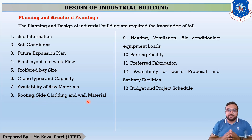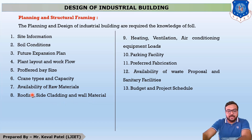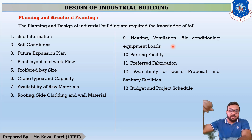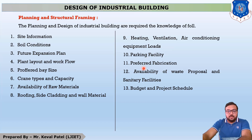For roofing, there are basically two types of materials: first is GI Sheet (Galvanized Iron Sheet), and second is ACC Sheet. These two sheets are generally used in the market for roofing, cladding, and side material. Next is Heating, Ventilator, and Air Conditioning Equipment Loads — if we provide ventilations on top of the industry, we need to account for the load of that material. Next is parking facility, preferable fabrication, availability of waste disposal and sanitary facilities, and finally the budget and project schedule.